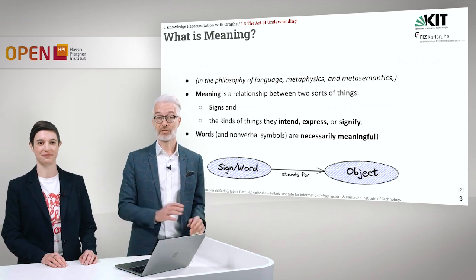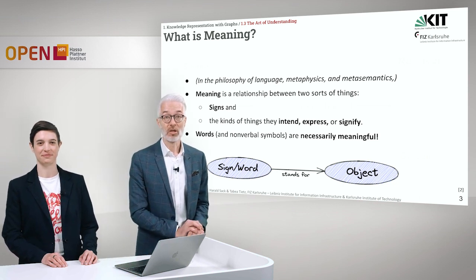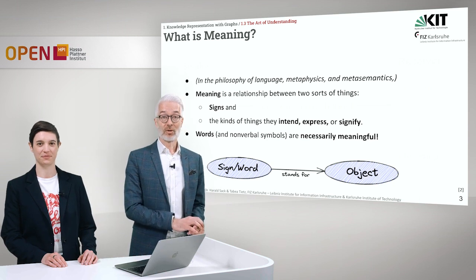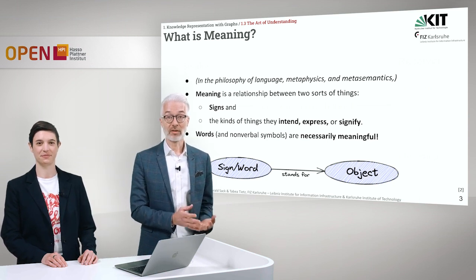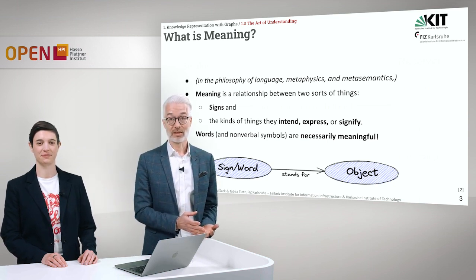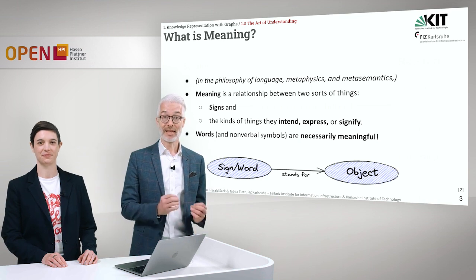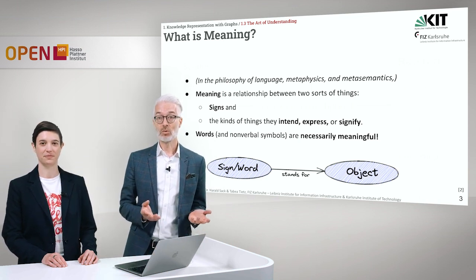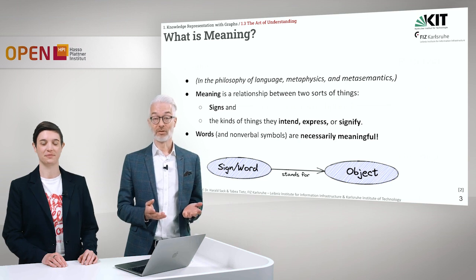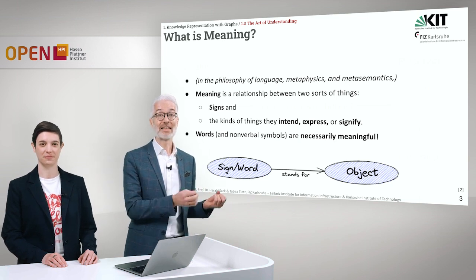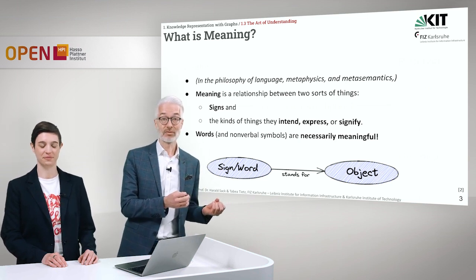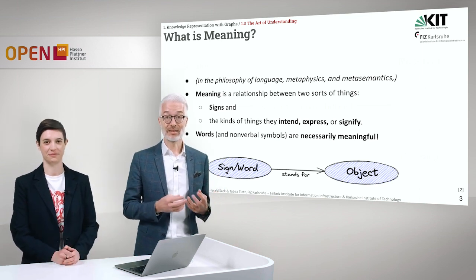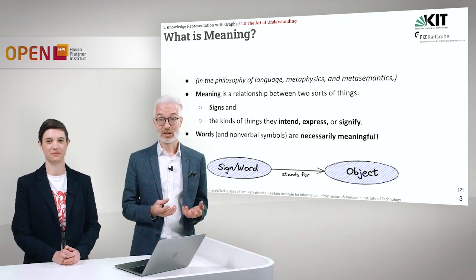For that, we first have to deal with meaning. We look at meaning from the viewpoint of philosophy of language, metaphysics and meta-semantics. There, meaning is a relationship between two sorts of things. On the first side, we have signs, and of course the kind of things these signs intend, express or signify.